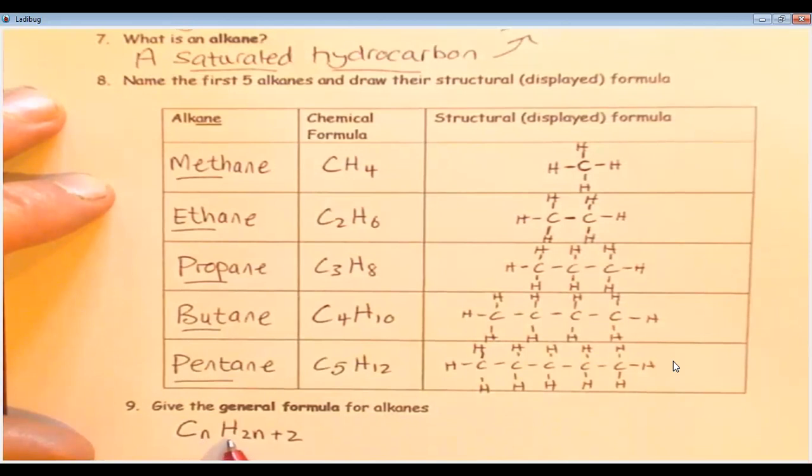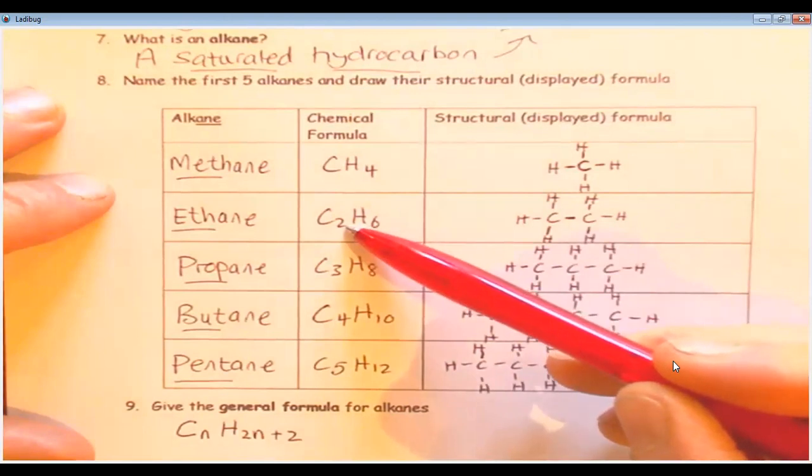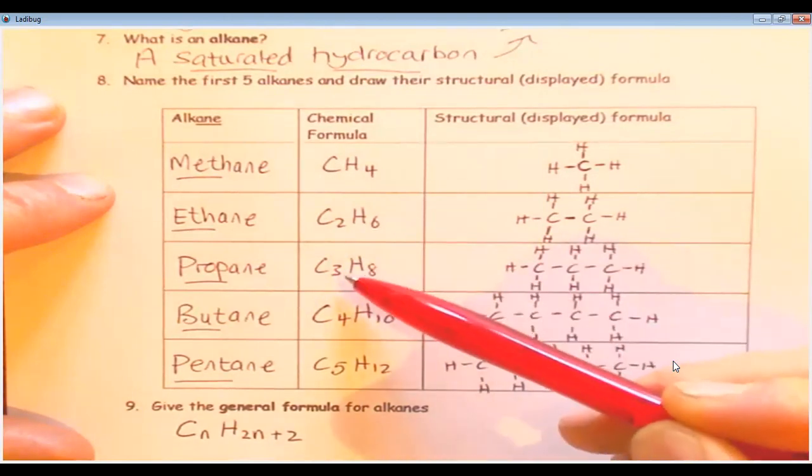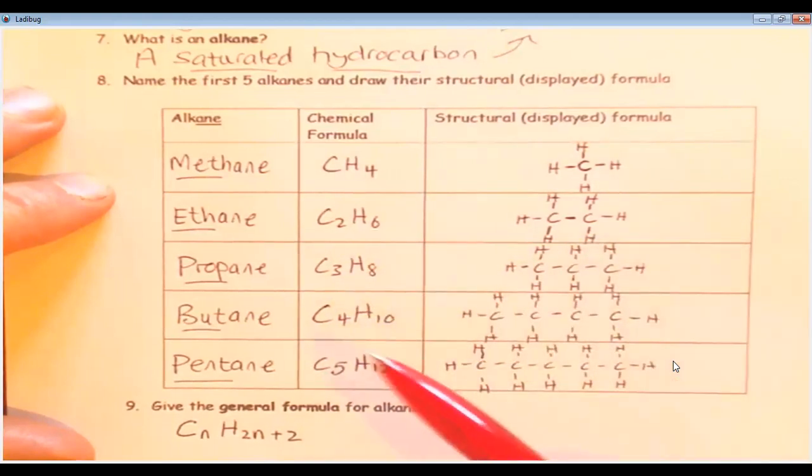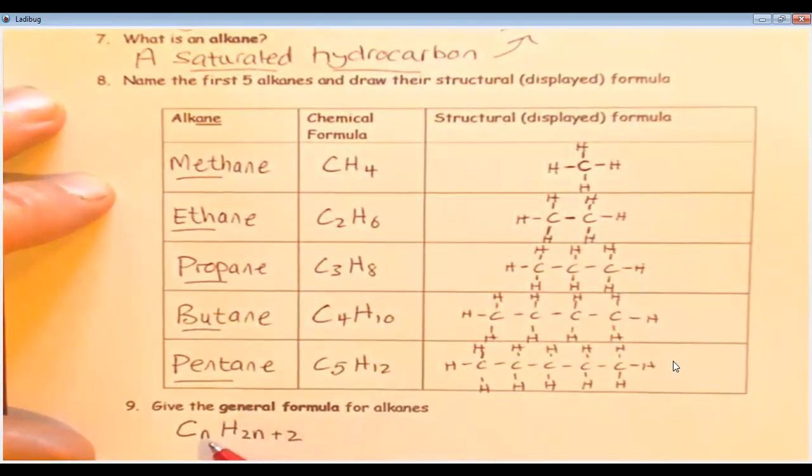And what that essentially means is whatever the number of carbons an alkane has, if you want to know the number of hydrogens you double it which is 2n and you add 2. And you can check that here. So if I've got two carbons, the number of hydrogens I just double that number and add 2. So 2 times 2 is 4 and 2 is 6. 3 times 2 is 6 and 2 is 8. So if you double the carbons and add 2 you get the hydrogens. That we call the general formula.